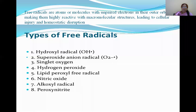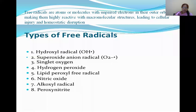The types of free radicals are: hydrogen radical, superoxide anion radical, singlet oxygen, hydrogen peroxide, lipid peroxide free radical, nitric oxide, alkyl radical, and peroxynitrate. These free radicals can damage the macromolecular structures, leading to cellular injury and homeostatic destruction.